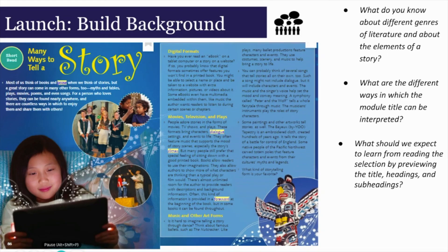And you'll demonstrate your learning by determining specific ideas in an informational text that are important to the meaning. The title of our module is What a Story. In this module, we will be reading selections from different genres that each tell a story. What do you know about different genres of literature and about the elements of a story? What are the different ways in which the module title can be interpreted? I want you to turn to 'Many Ways to Tell a Story' in your textbook on pages 62 and 63. What should we expect to learn from reading the selection by previewing the title, headings, and subheadings? It looks like I will read to find out the different ways to tell a story.